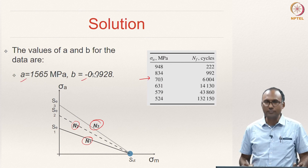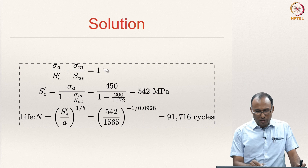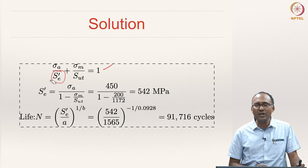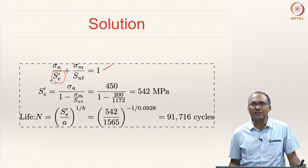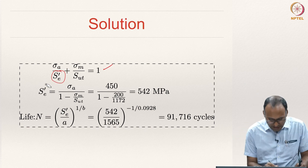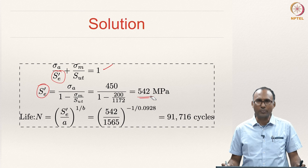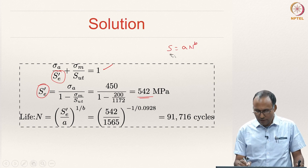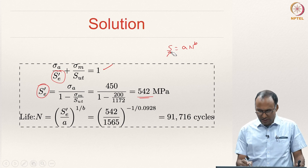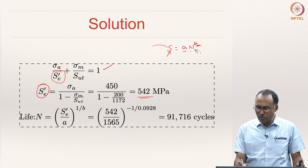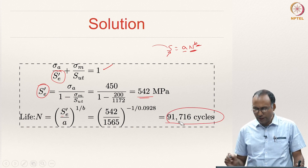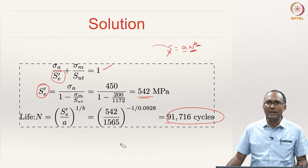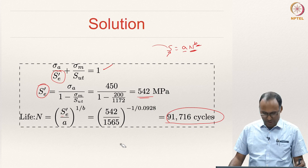The Goodman diagram gives us: sigma_a/S_e' + sigma_m/S_ut = 1. Here I am using S_e' (uncorrected endurance strength) because I do not have information about corrected endurance strength. The uncorrected endurance strength comes out to be 542 MPa. Once you know the uncorrected endurance strength, you use S = A·N^B, plug in this endurance strength — A and B are known — and calculate N. That gives a life of 91,716 cycles. When there is no mean stress, you directly calculate the life of the component in the absence of mean stress.